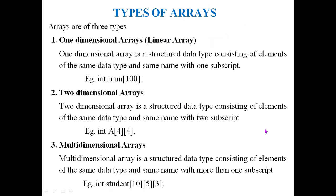There are three types of arrays: one-dimensional, two-dimensional, and multi-dimensional. A one-dimensional array is a structured data type consisting of elements of the same data type with the same name, and has one subscript. For example, int num[100] means 'num' is an array that can store a maximum of 100 elements of type integer.